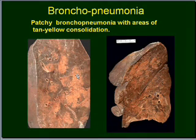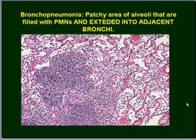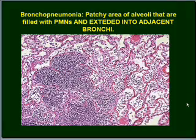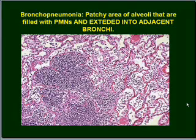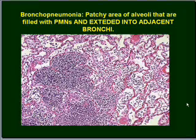This is a microscopical picture, which is not a very good one, so I will read out the description. This is a very classic description that may appear in exam questions on bronchopneumonia: 'Patchy areas of alveoli that are filled with PMN and extended into the adjacent bronchi.' PMN stands for polymorphonuclear cells, which is another name for neutrophils.